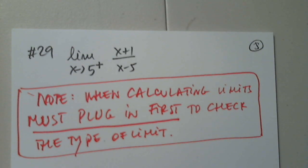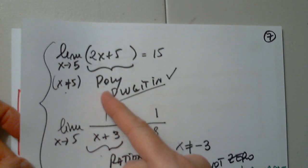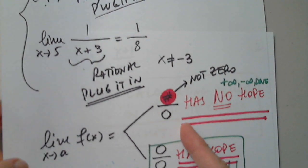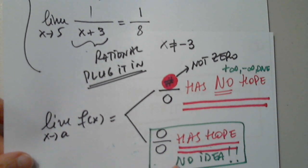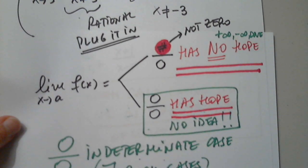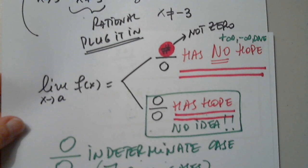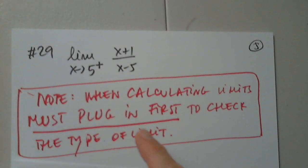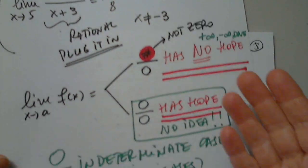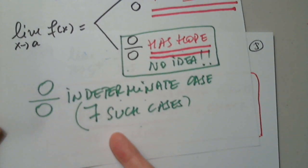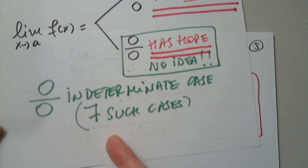You will see there are several types of limits. For example, this is one type — it's a number. This is another type — it's a problem. The other six indeterminate cases will be other situations. Every limit is different. If I don't plug it in, I have no idea what I'm facing — a number, a problem, or one of the six indeterminate cases. Once I plug it in, I'll know exactly what to do next.